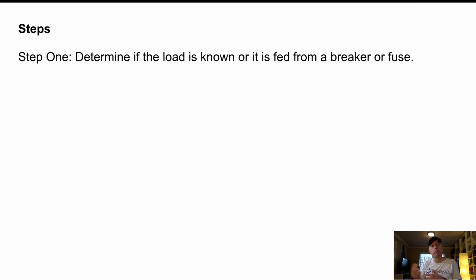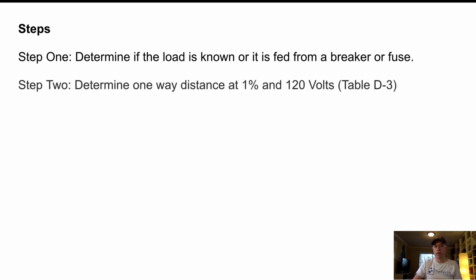But step one is determine if the load is known or if it's fed from a breaker or fuse. So I'm going to go through two examples showing both. So we'll go with a known load first and then we'll go with a breaker or overcurrent device after. Step two is determine the one way distance at 1% and 120 volts. Now that's table D3, which I'll show you what it looks like in a second here. Table D3 gives us a distance for different sizes of loads and different sizes of conductors, but it's only at 1% and only for 120 volts. So we just saw from that code rule 8-102 that we were not to exceed 3% for a branch circuit, which is what we're going to be doing or 5% from the feeders of the supplies authority. But we're going to go with the 3%. So we can't exceed that and 120 volts. Well, not everything is 120. So what we do is we divide that voltage by 120.